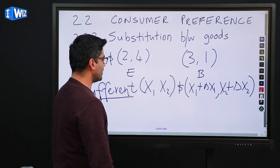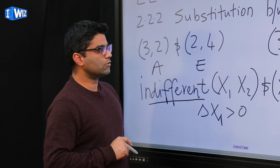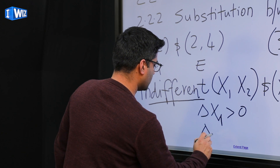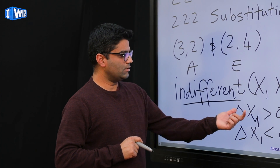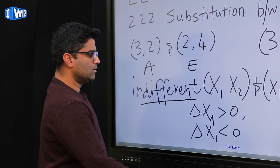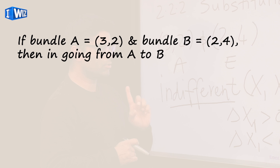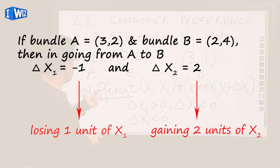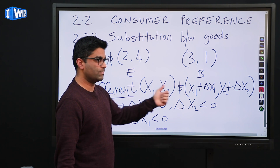If delta x1 is positive — meaning you are getting more of x1 — given the fact that you are indifferent between these two bundles, it has to be the case that delta x2 must be negative. Otherwise you are not going to be indifferent. When we talked about monotonic preference we clearly preferred one bundle over the other, but now when we are saying we are indifferent, if we get more of x1 then we have to lose some of x2 to be equally happy.